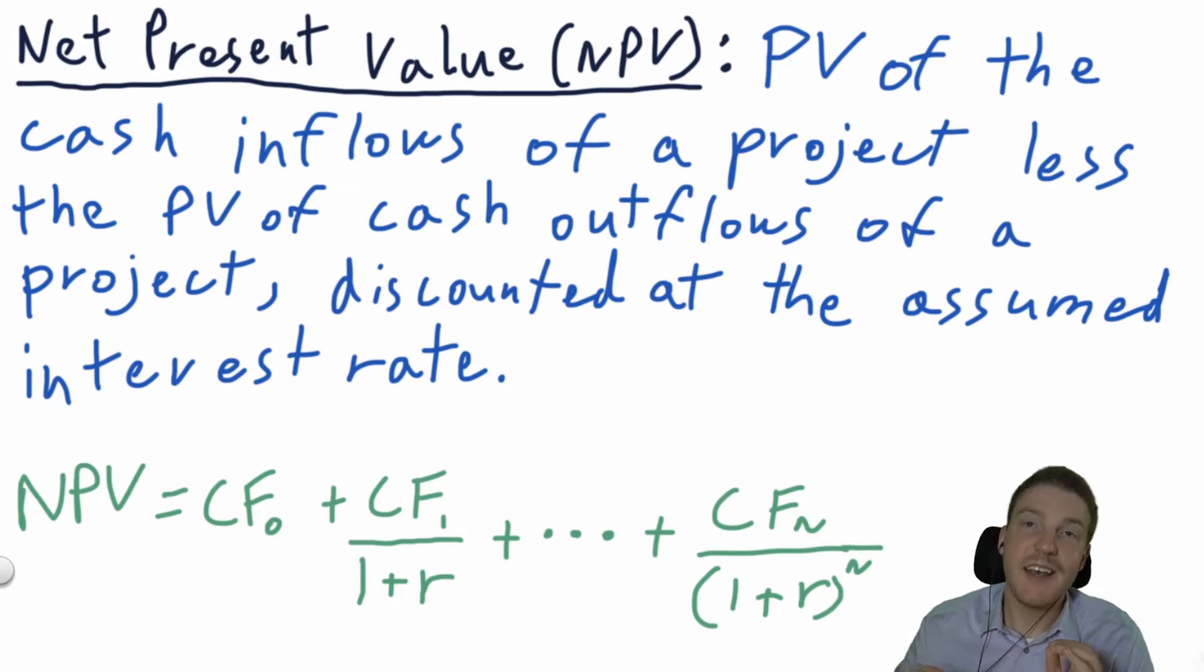Basically, what we're doing is we're finding all of the cash inflows and the times that we'll be receiving them, minus all of the cash outflows and the times that we'll be paying them, and then discounting it back at whatever our assumed interest rate is.